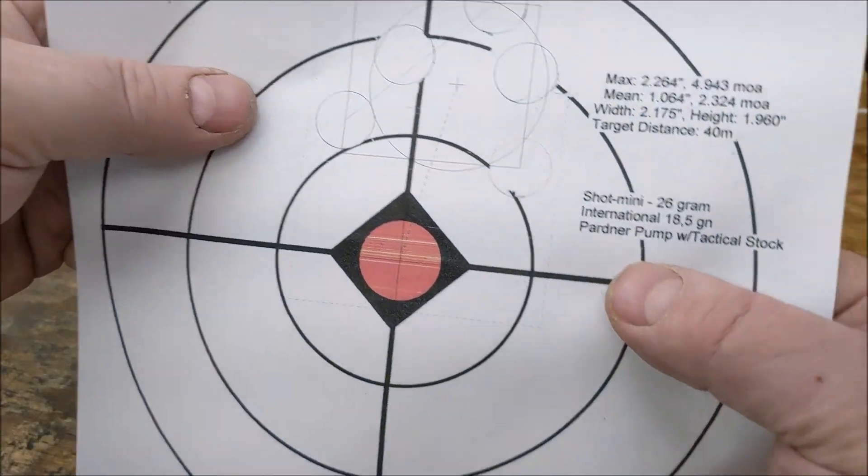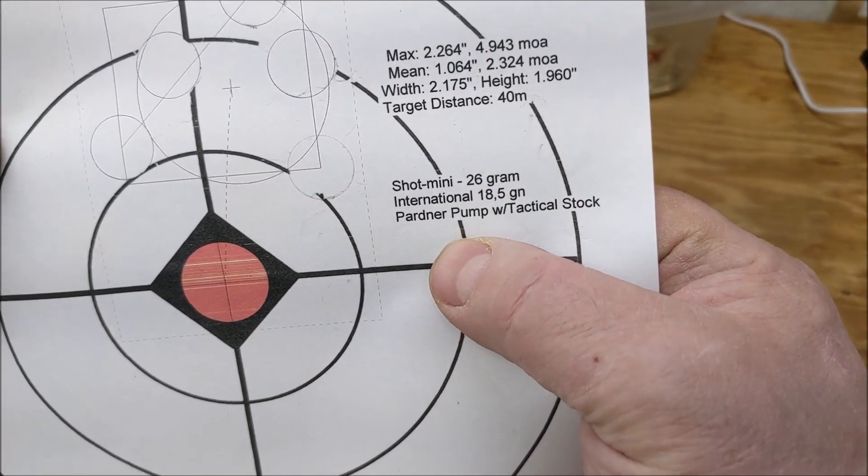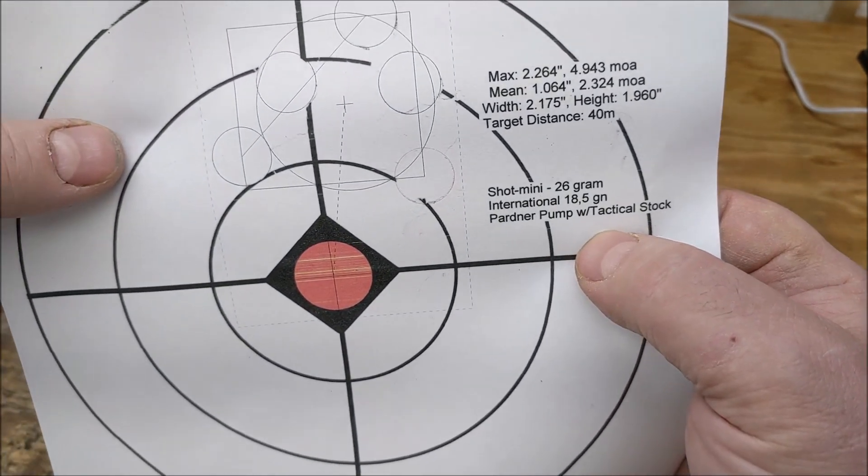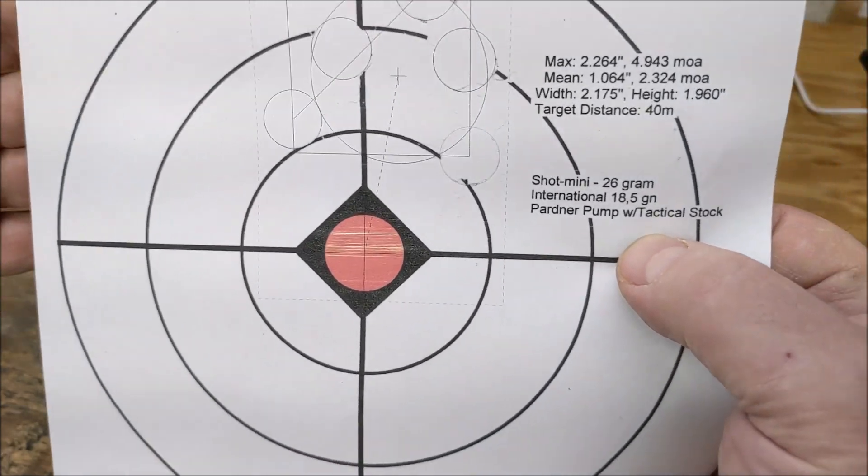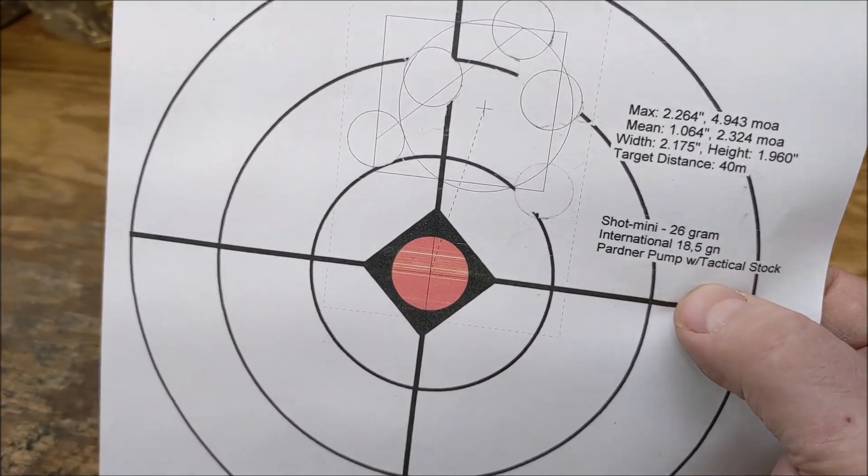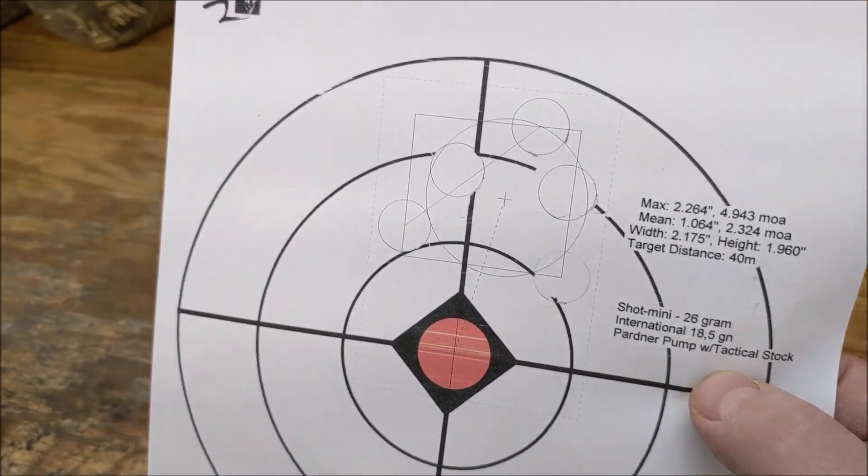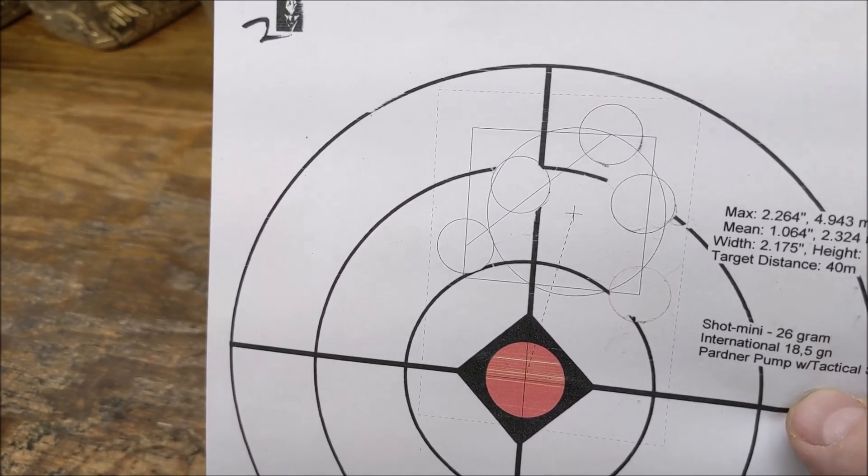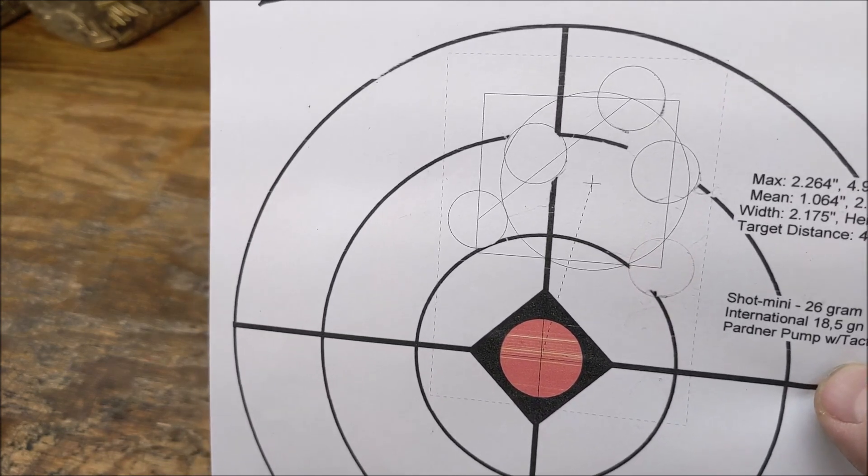I was using my el cheapo $150 Pardner pump with $110 tactical stock I just added, which turned a $150 shotgun into a $260 shotgun. Chinese 870 clone, H&R.